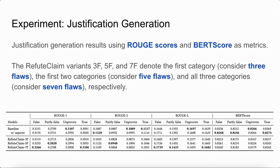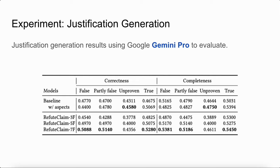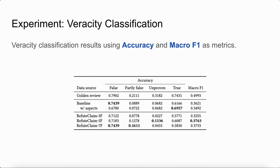The ReviewClaim seven-flaw variant performed well on ROUGE score when elucidating false claims, while it has weaker performance on true claims since the model highlights flaw-checking. We also utilize large language models like Gemini Pro to evaluate justification generation results. The table shows the ReviewClaim seven-flaw variant performs well on both correctness and completeness, particularly on false claims. The veracity classification results show ReviewClaim performs well on false claims, while having weak performance on true claims, as the model's emphasis on flaws increases the likelihood of negative statements, potentially confusing the cause of failure.